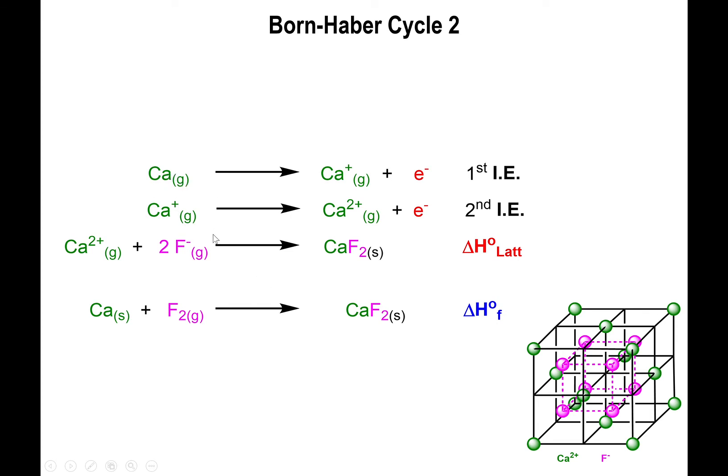Okay, so let's start with all that. Calcium: we're going to go from calcium solid to calcium gas. Once we are in the gas phase, we can then turn calcium gas into Ca⁺, which is the first ionization energy. Then calcium⁺ gas into Ca²⁺ gas, which is the second ionization energy.